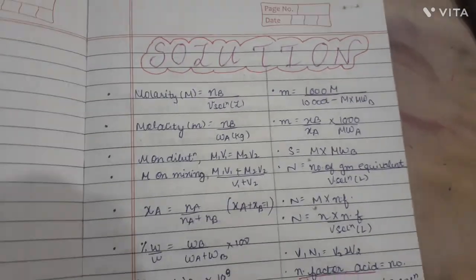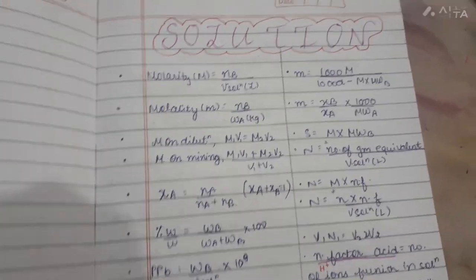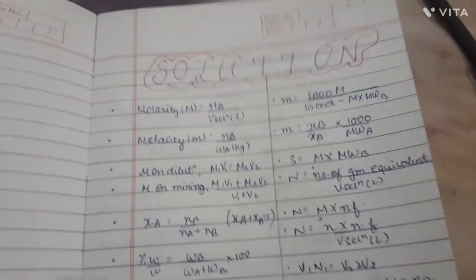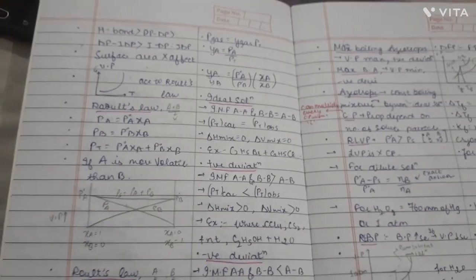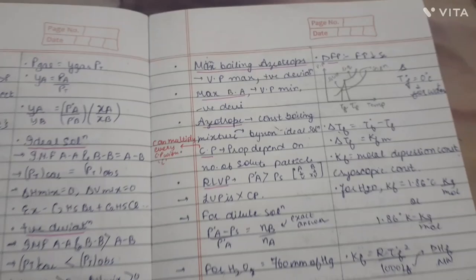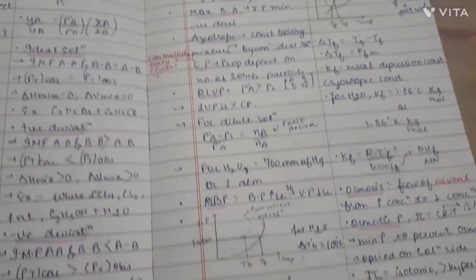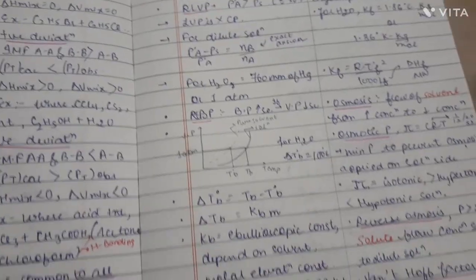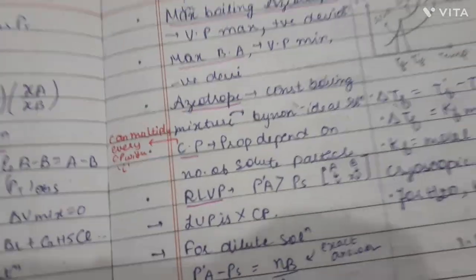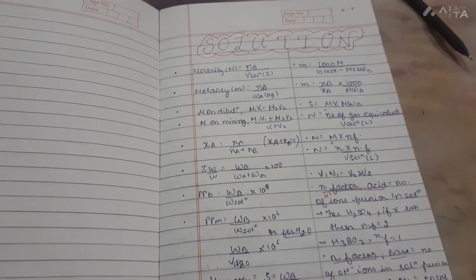Generally I don't make short notes, but this is my first time trying. Let me show you how I make short notes — I've made them for the first time, for Physical Chemistry. In these notes I've written any theory, any formula, any important thing in a condensed way. I've tried to add all of that in here. So let's start.